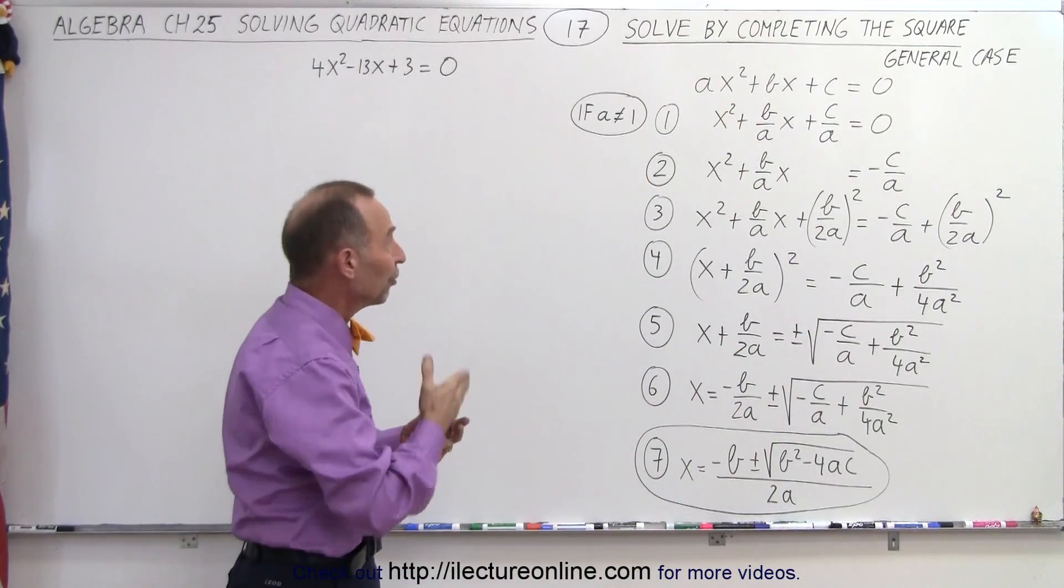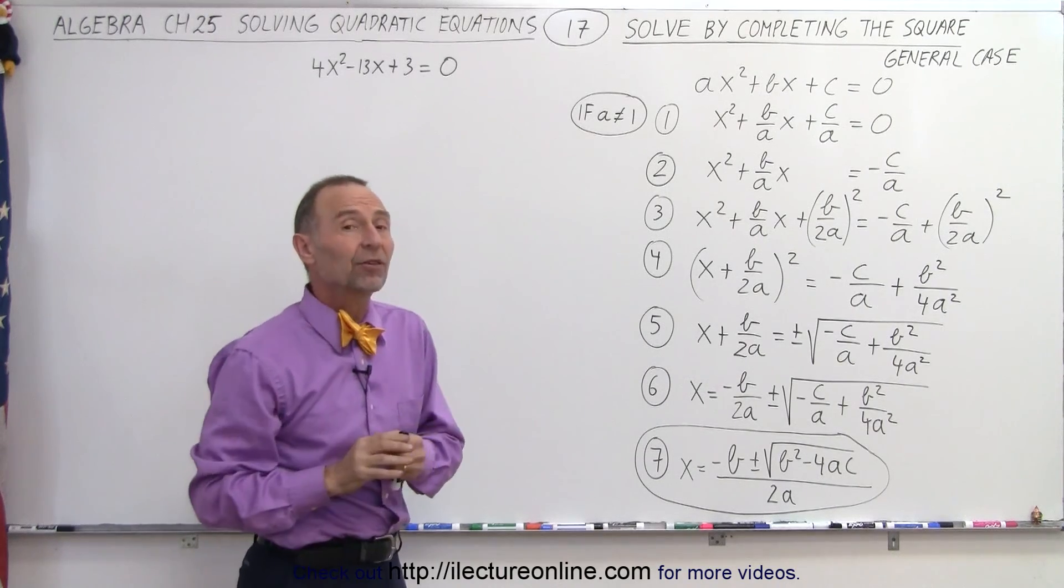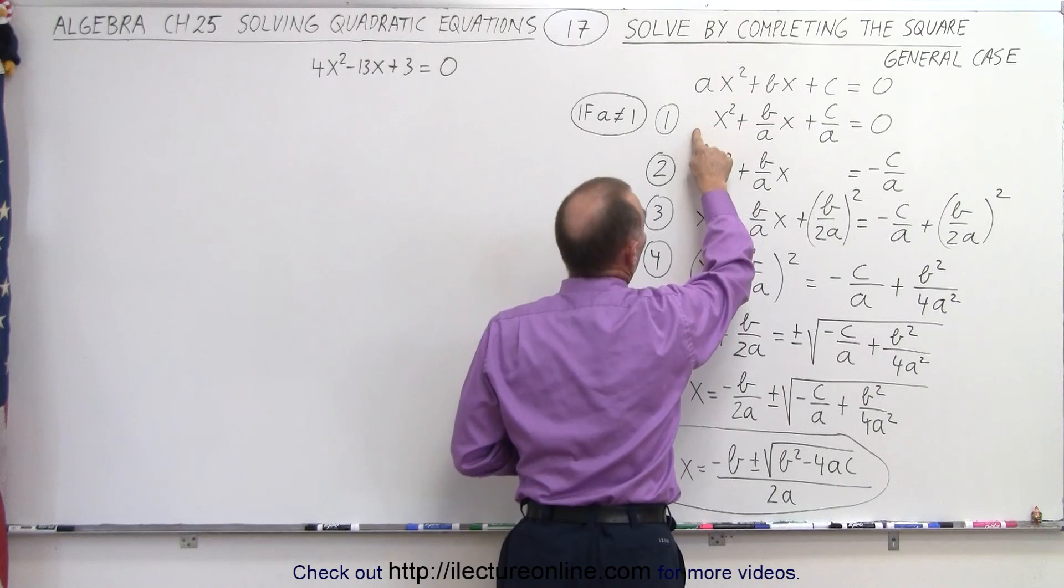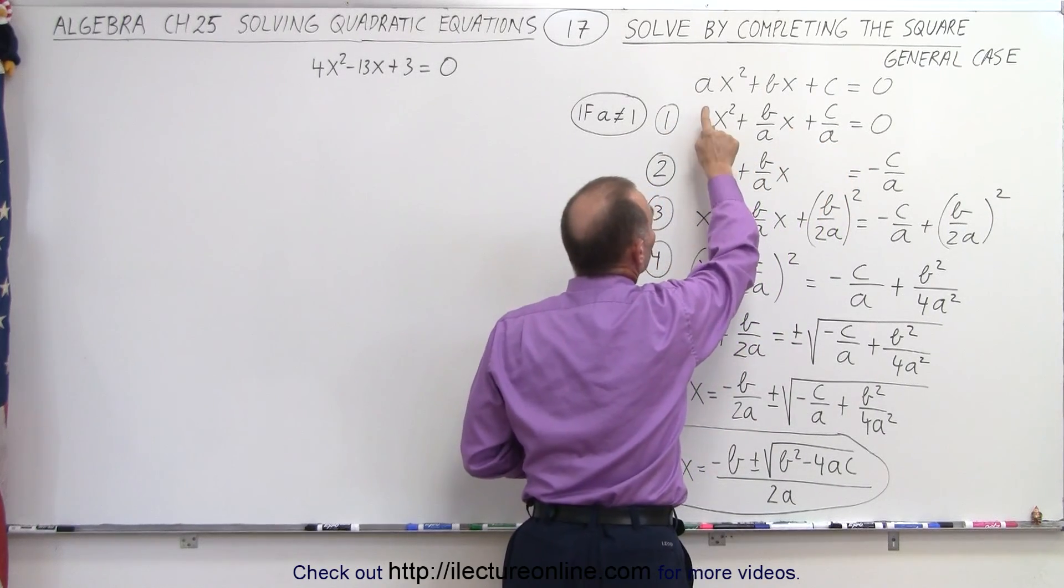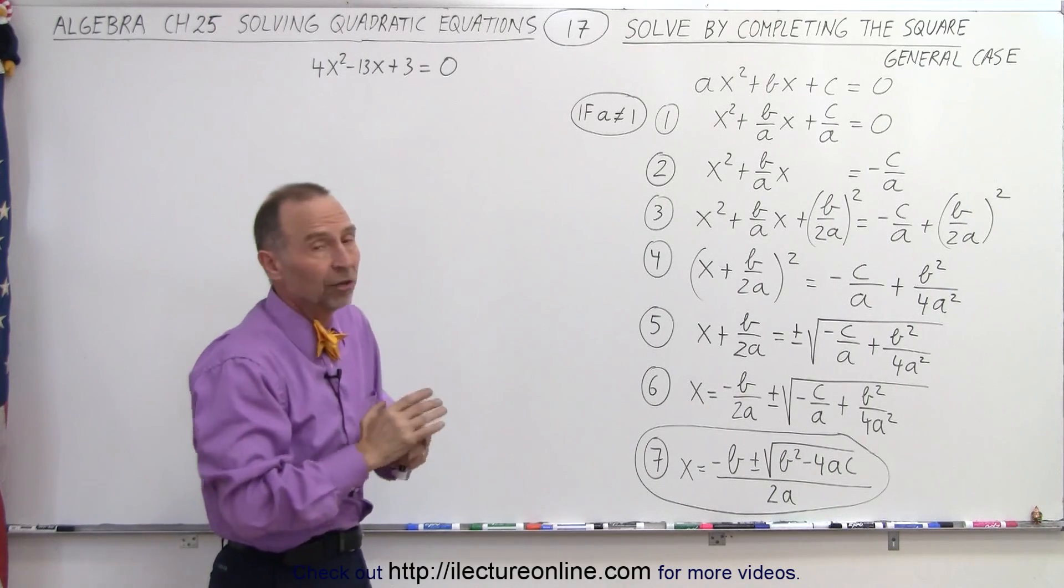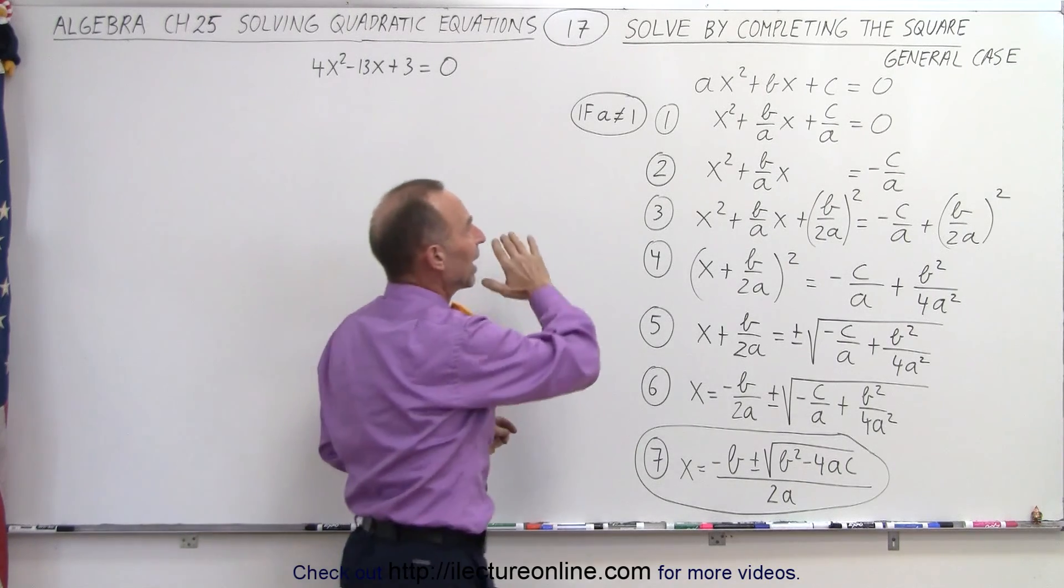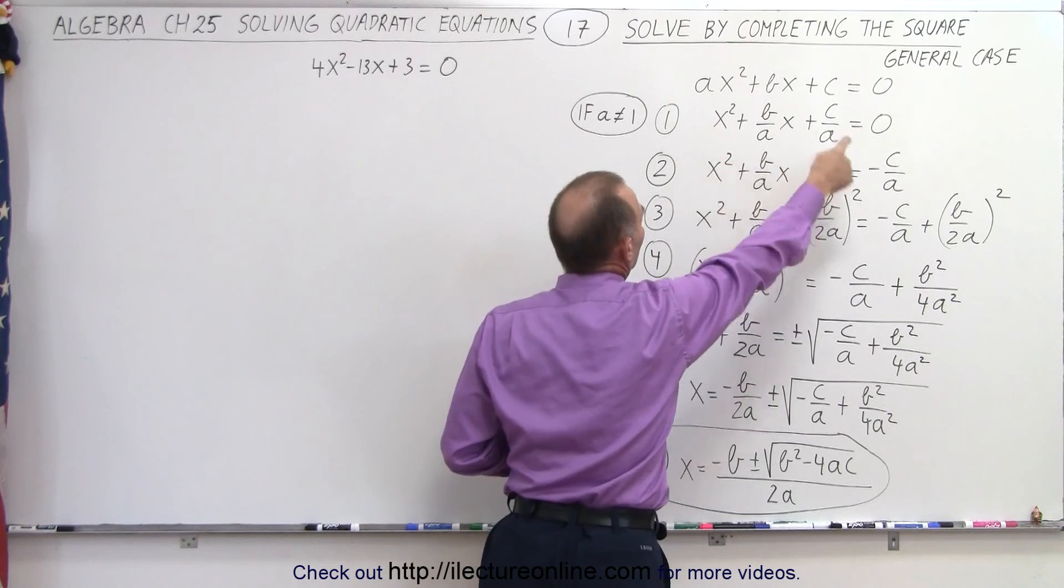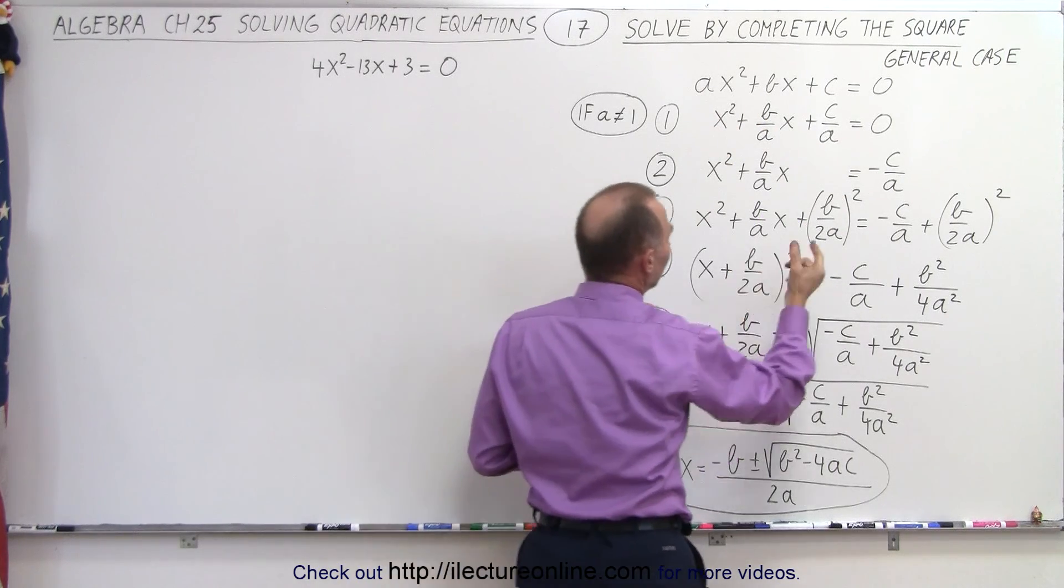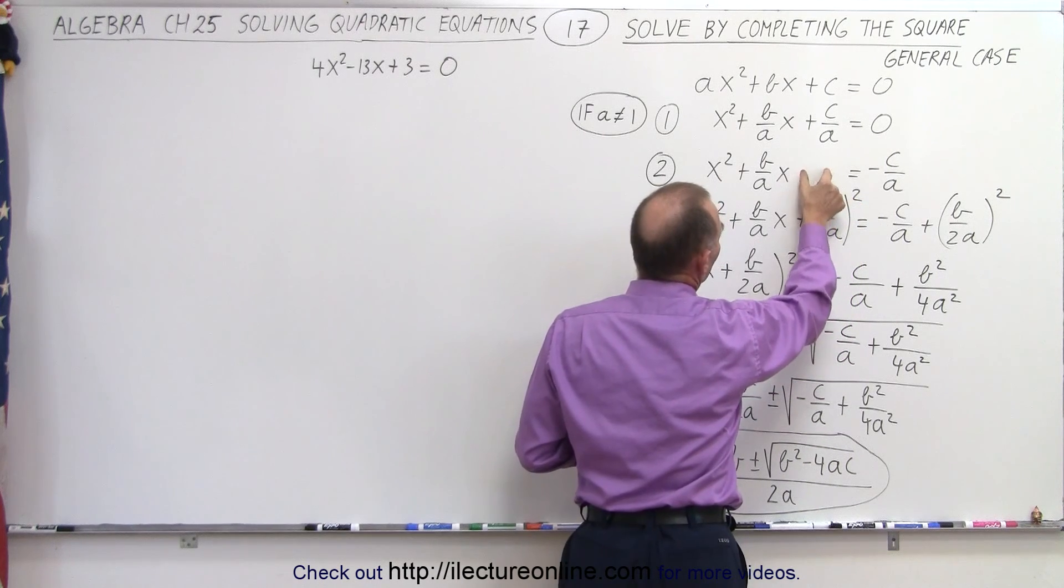What that means is on the first step, we're going to divide both sides of the equation by the numerical coefficient of the x² term. In other words, we divide the whole equation by a so that we can turn this into a 1. We want 1x² in the front, so we accomplish that by dividing everything by a. The second step will now be to take the constant term and move it to the right side, so we have -c/a on the right side.